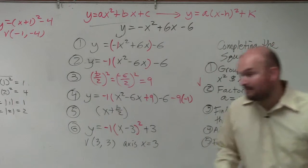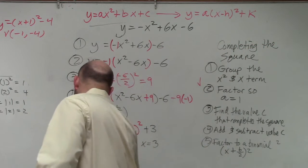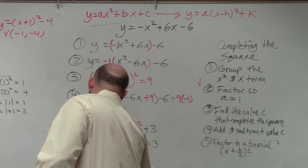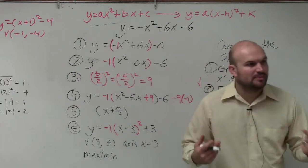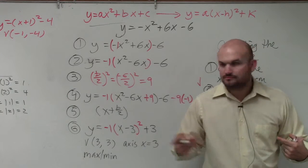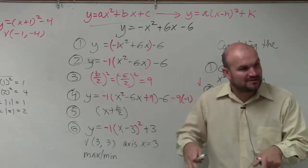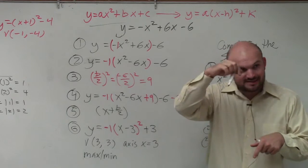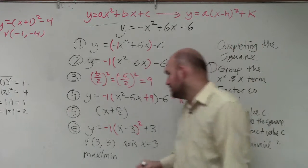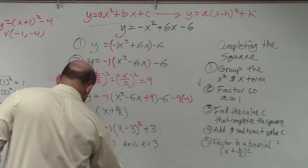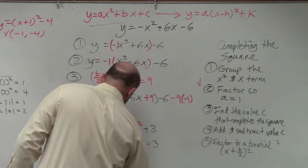If we want to determine the max or min, well, is the graph opening down or opening up? Down, right? Because there's a negative. That a is negative. So it's opening down. So therefore, our vertex, is that going to be a maximum or a minimum? Maximum. So we could say it's going to be a maximum. And that maximum point is 3 comma 3.